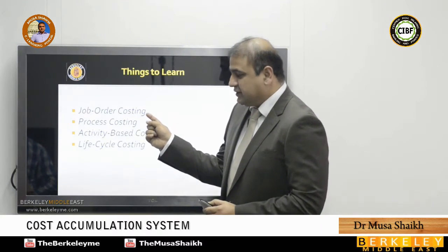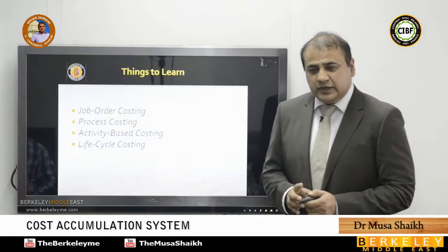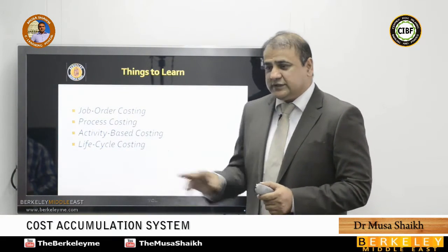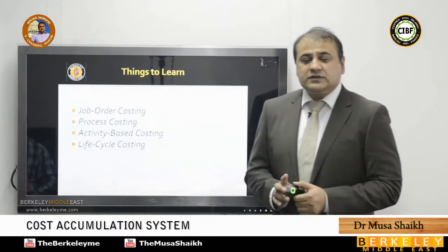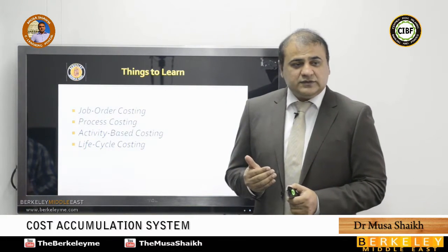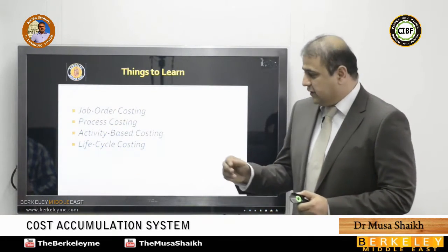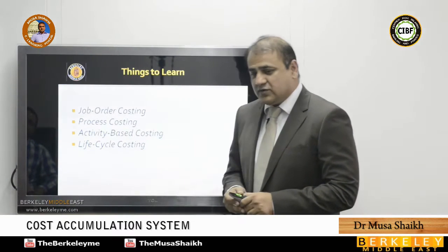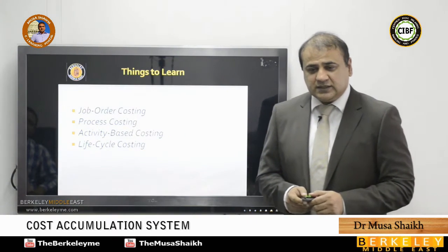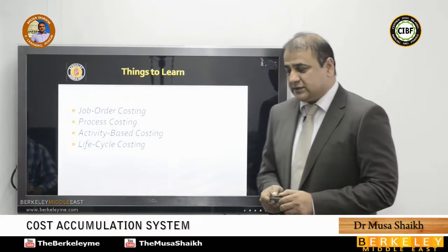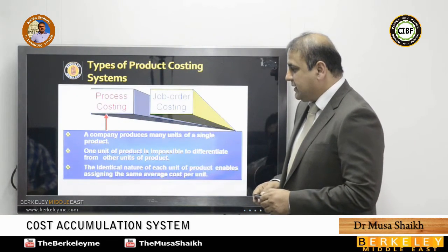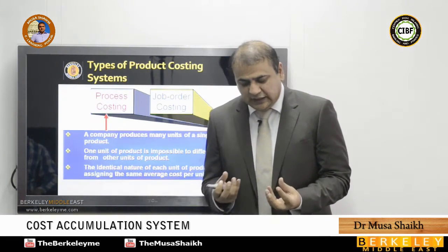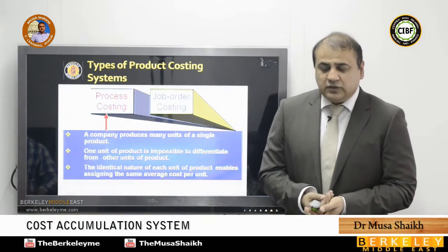There are some traditional methods: job order costing — how it works I will explain — process costing, which is based on certain industries, activity-based costing, which is the latest method, and life cycle costing, which we will discuss last.